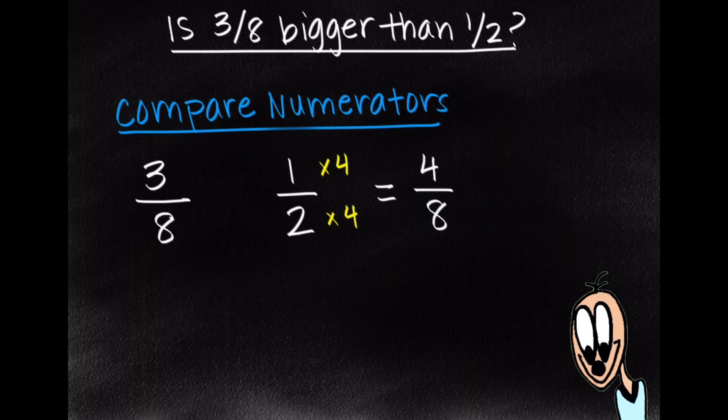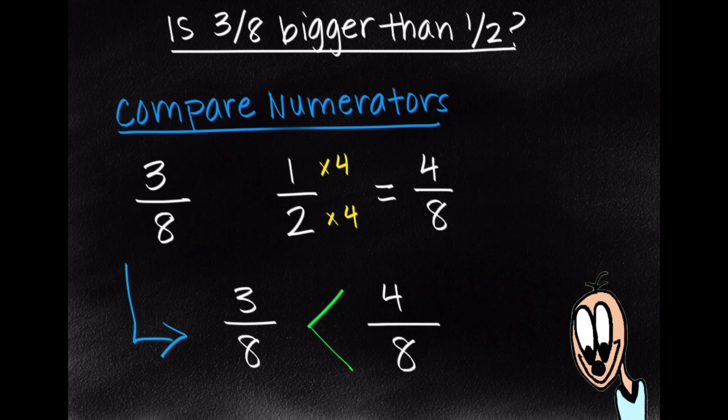So this allows us to much more easily compare the fractions because now we have 3 eighths and 4 eighths. So all we have to do is look at and compare the numerators. So we have 3 eighths and 4 eighths. 4 is greater than 3, so therefore 4 eighths is greater than 3 eighths. So therefore by comparing the numerators we can see that 1 half is greater than 3 eighths.